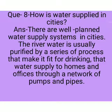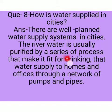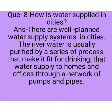Question 8: How is water supplied in cities? Answer: There are well-planned water supply systems in cities. The river water is usually purified by a series of processes that make it fit for drinking. That water is then supplied to homes and offices through a network of pumps and pipes.